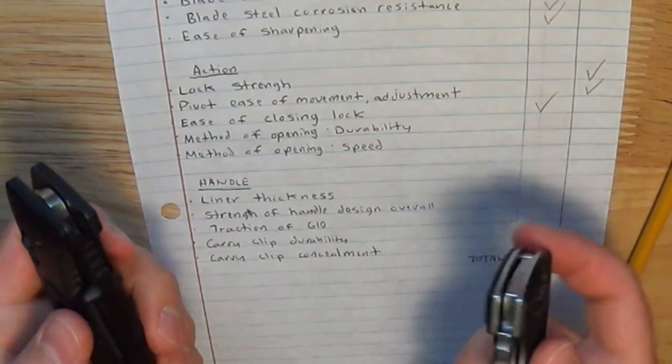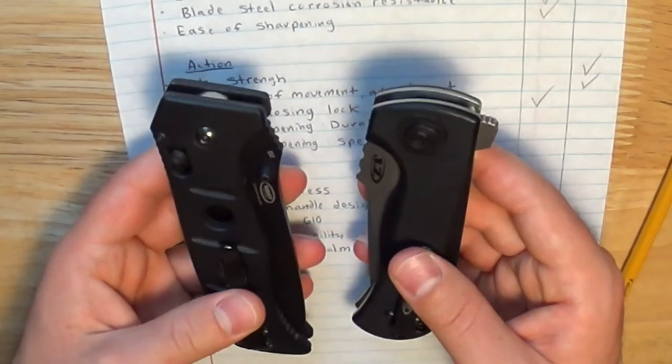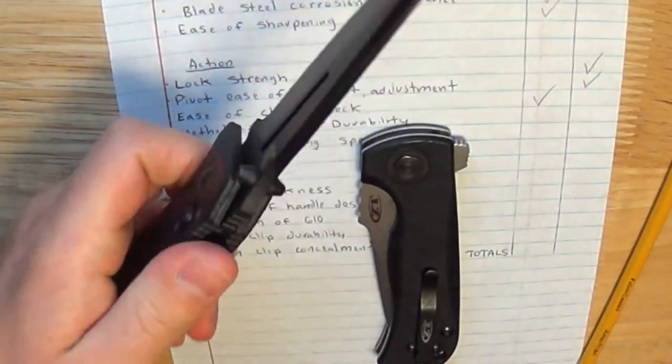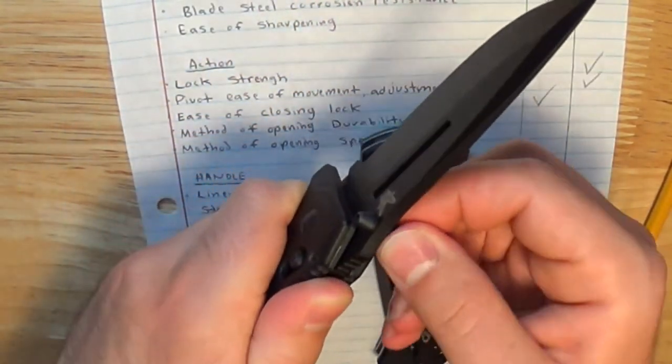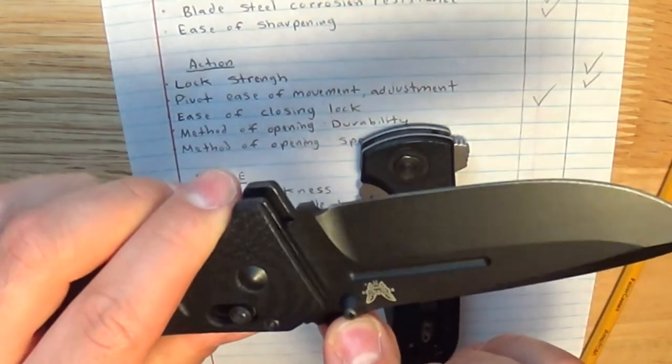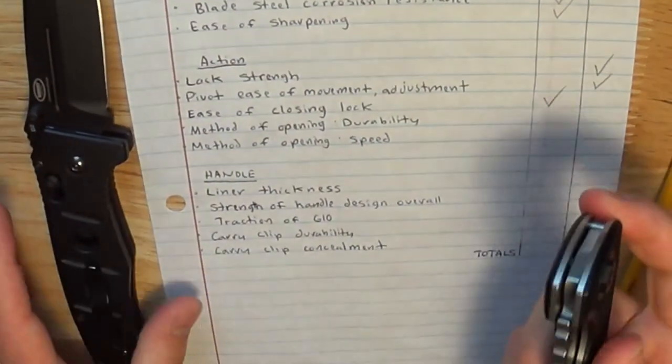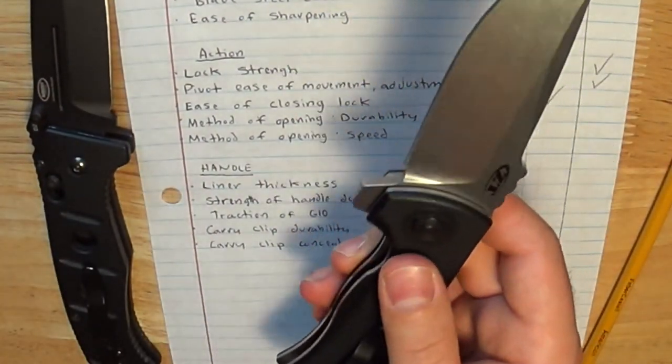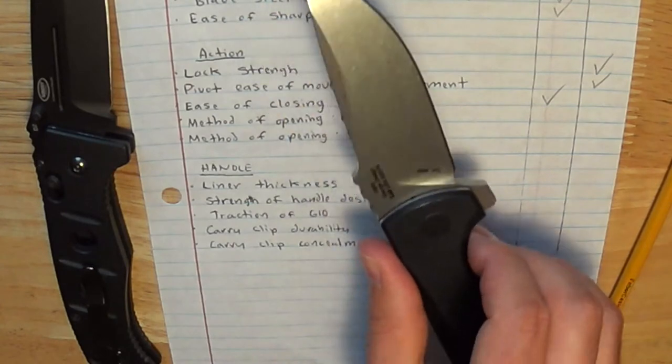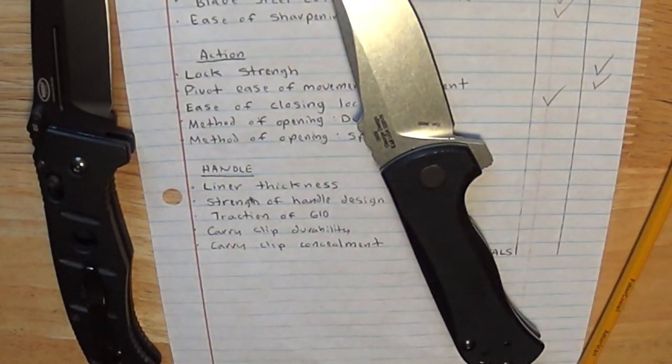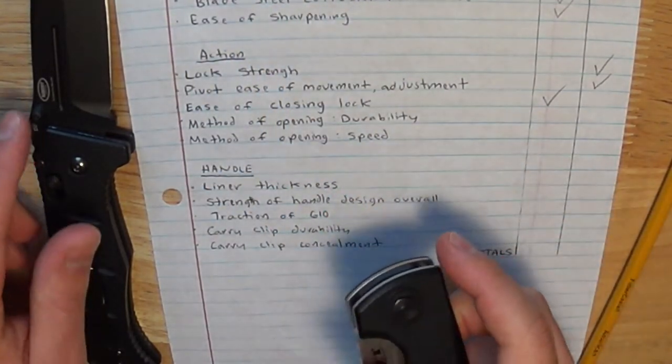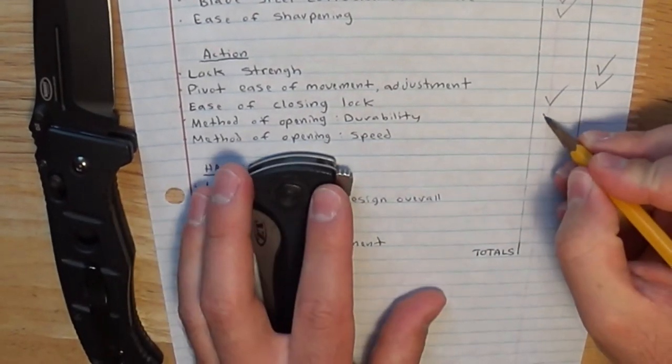Alright, method of opening durability. I threw this one in here because I have broken thumb studs off of knives, mainly because they just rotate loose and fall off. I don't think you're going to have to worry about that with the Adamas. It's a very durable design and Benchmade has these so that they're really not going anywhere. ZT is the flipper. It's part of the blade. Unless you crack the blade, in which case your knife is probably ruined anyway and you're going to send it in to get re-bladed for around $30 to $35 from ZT, you're not going to crack that flipper off. So while I'd say thumb studs are durable, a flipper being part of the blade is going to win that every time.